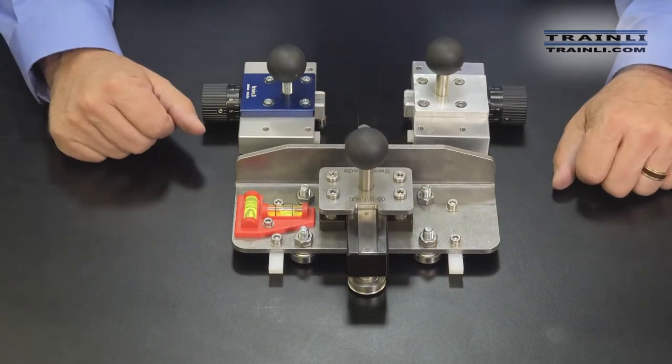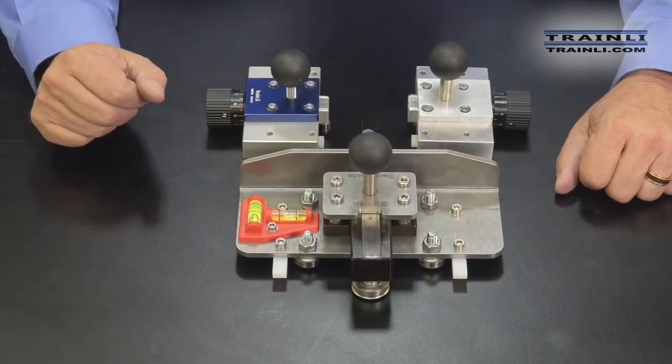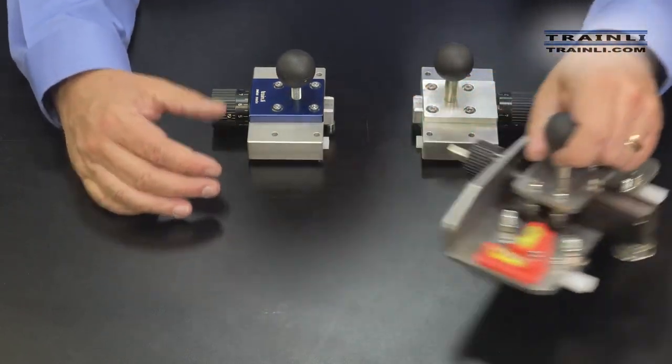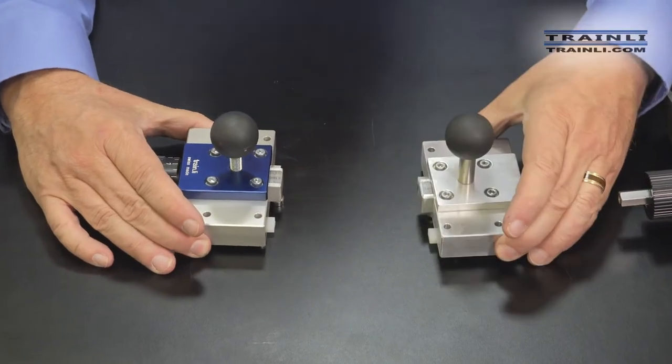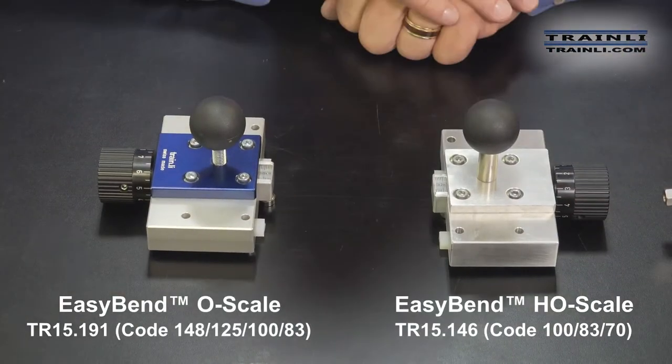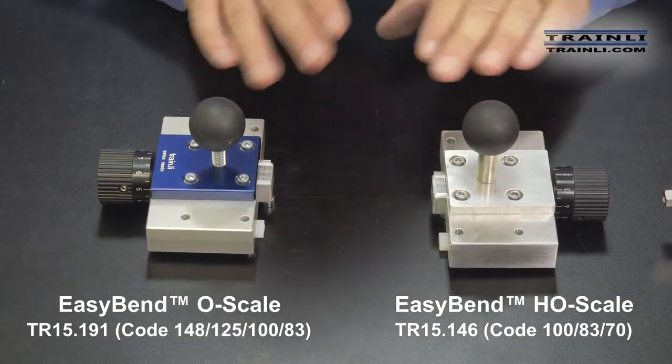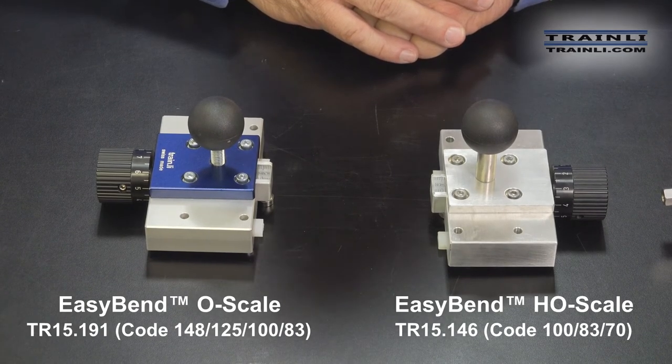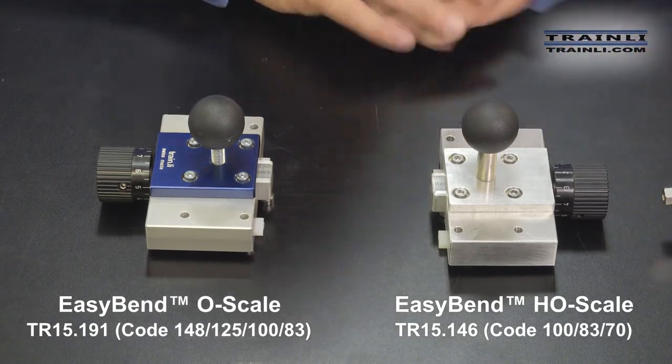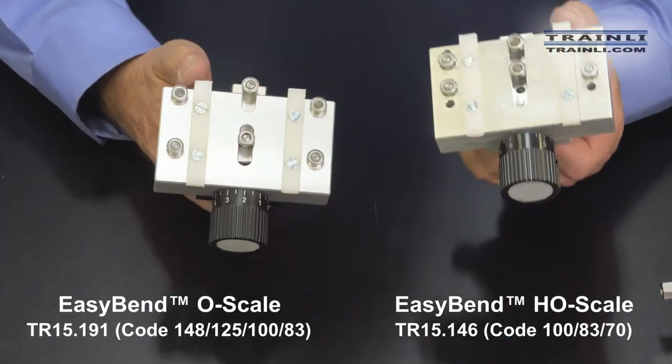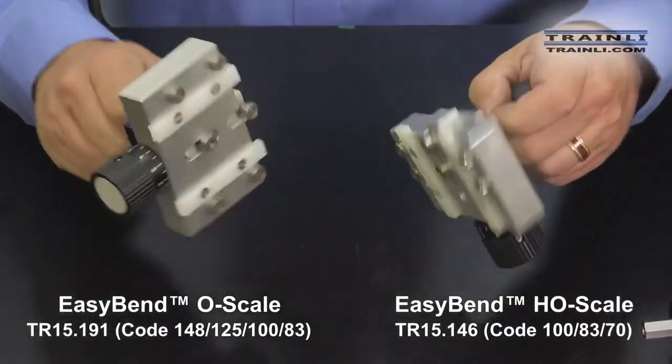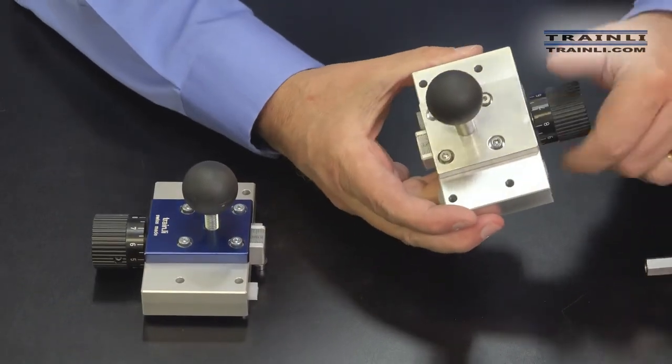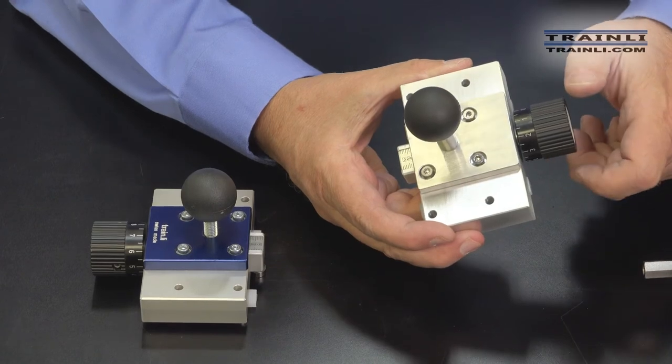So we sell these dual rail benders in different gauges. So this is the G gauge rail bender and we have the O and HO. So no matter what scale you're modeling in, you can use these rail benders on your flex track. And they work exactly the same way as the G gauge one. They have the rollers, the Teflon bars, and the numerical scale so that you can keep track of your radiuses for your turns.